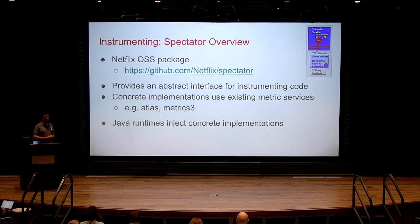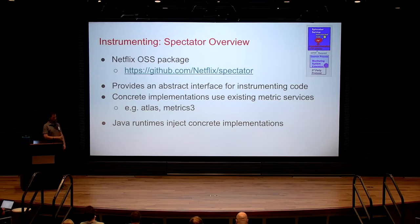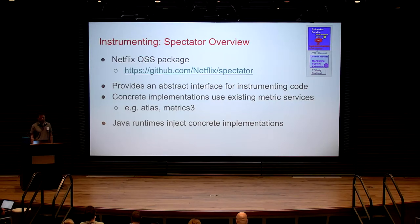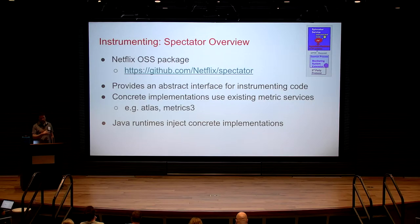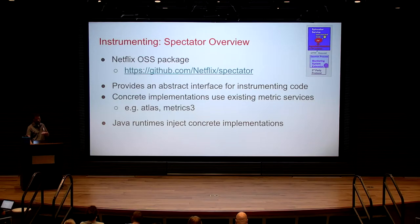Spectator is a Netflix open-source package, not part of Spinnaker itself, but Spinnaker uses it. It provides an abstract interface for instrumenting code — not tied to any particular monitoring system. Along with that they have concrete implementations like Atlas, or in the open source version, Micrometer 3 and others. The Java runtimes, which are Spring-based, use dependency injection to add a concrete implementation of the particular service into Spinnaker.